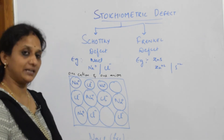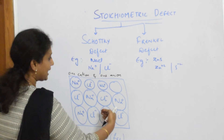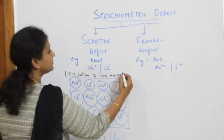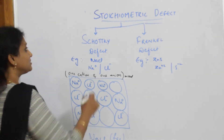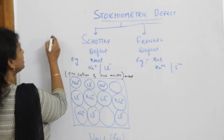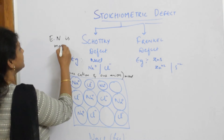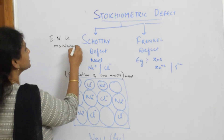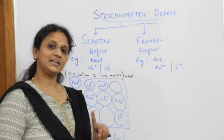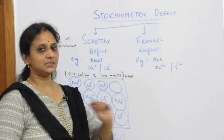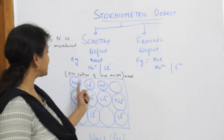Is electrical neutrality maintained? Yes, because both cation and anion have balanced each other. That is the reason they are called stoichiometric — both cation and anion have missed out. Because of this, electrical neutrality is maintained because both cation and anion have skipped out.